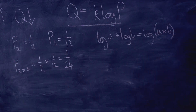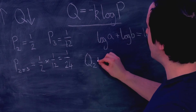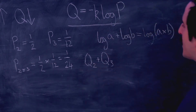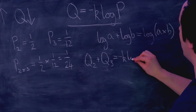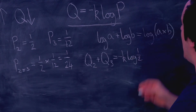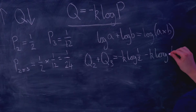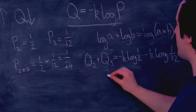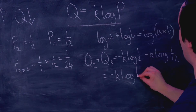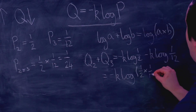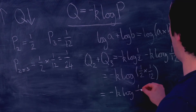So if I add the information content of statement two and statement three — Q2 plus Q3 — that equals minus K log of one half plus minus K log of one twelfth, which by the log rule equals minus K log of one half times one twelfth, which equals minus K log of one over twenty-four.